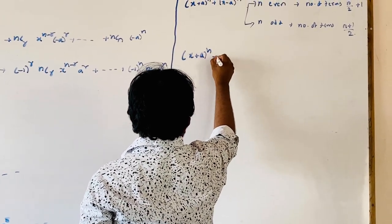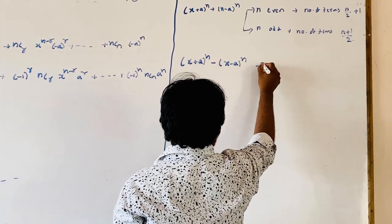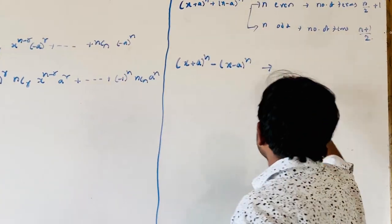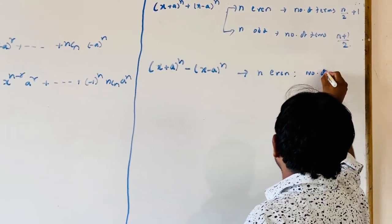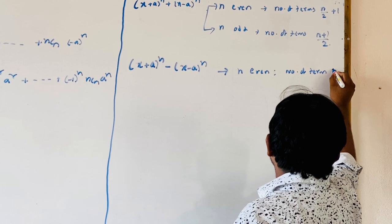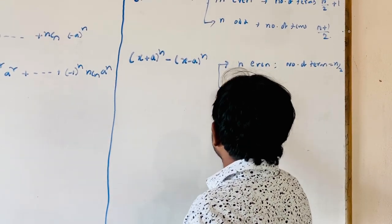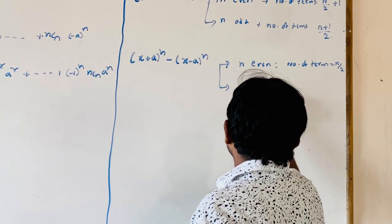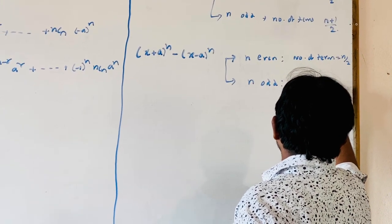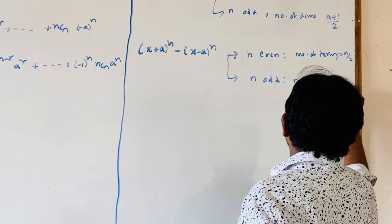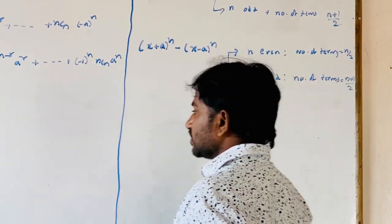Similarly, in the expansion of x plus a all power n minus x minus a all power n: when n is even, the number of terms is equal to n/2. When n is odd, the number of terms is equal to (n+1)/2.